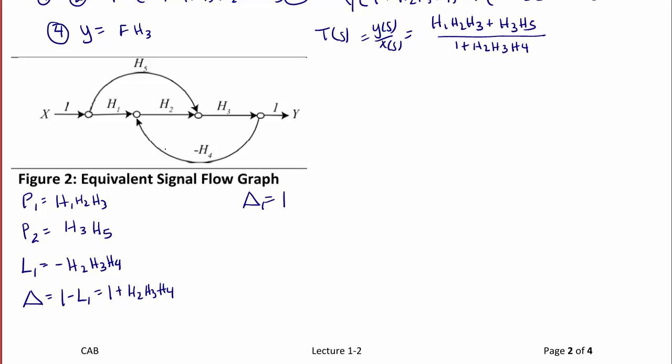So, the determinant Δ is 1 minus the sum of all loop gains. But H2, H3, H4 actually touches path 1, so Δ1 is just 1. And Δ2 is equal to 1, and once again, the loop H2, H3, H4 touches path 2, so Δ2 is also just 1.